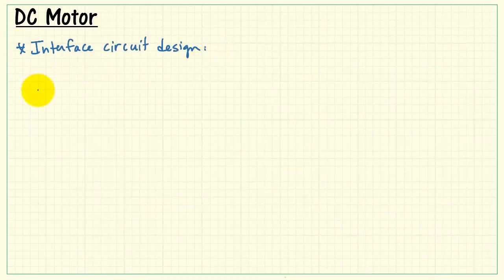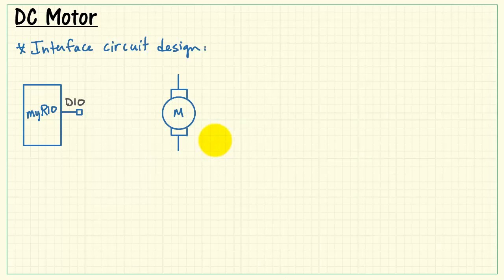Let's move on to the design of the interface circuit. At one end, we have the digital output from the MyRio, and this needs to drive the motor. This is unidirectional control.